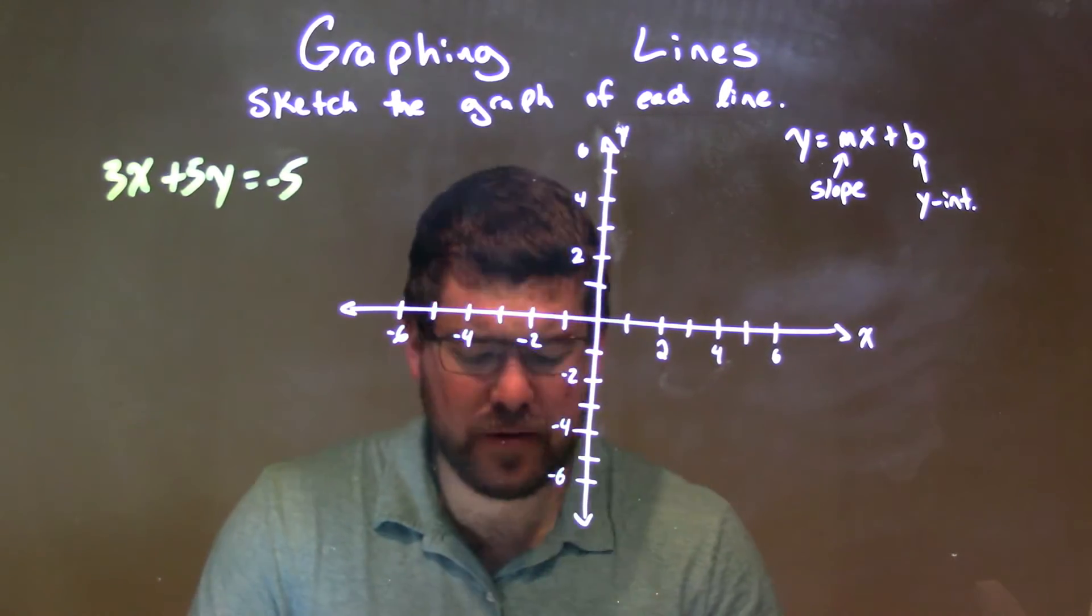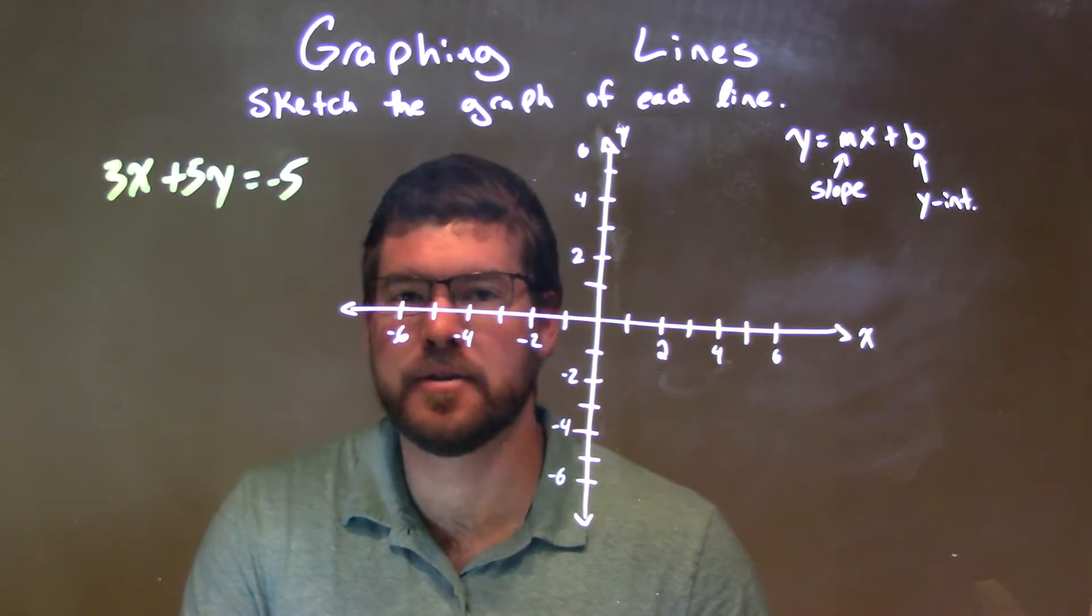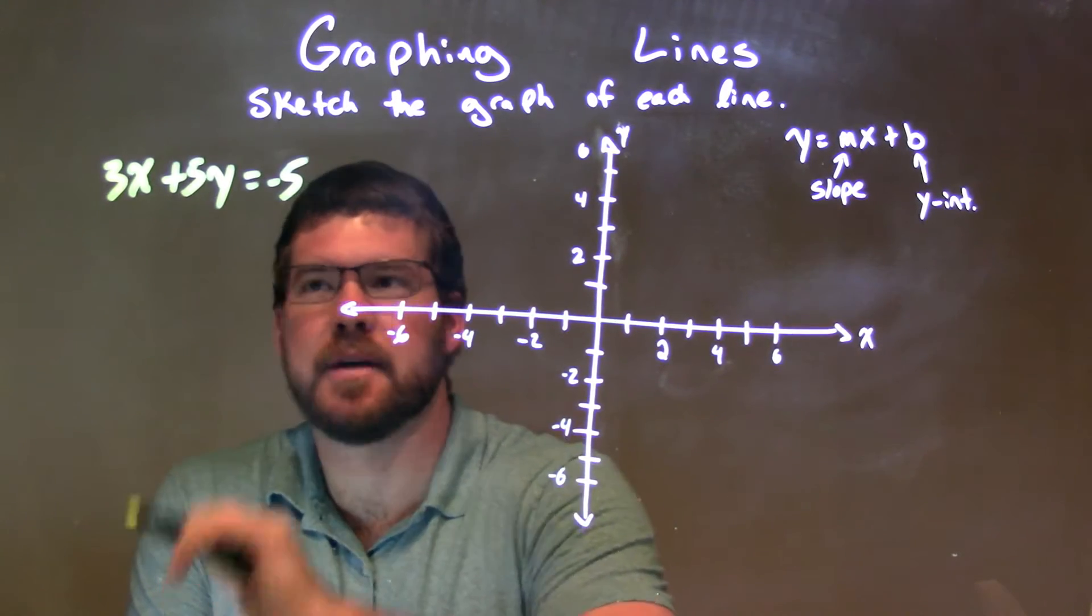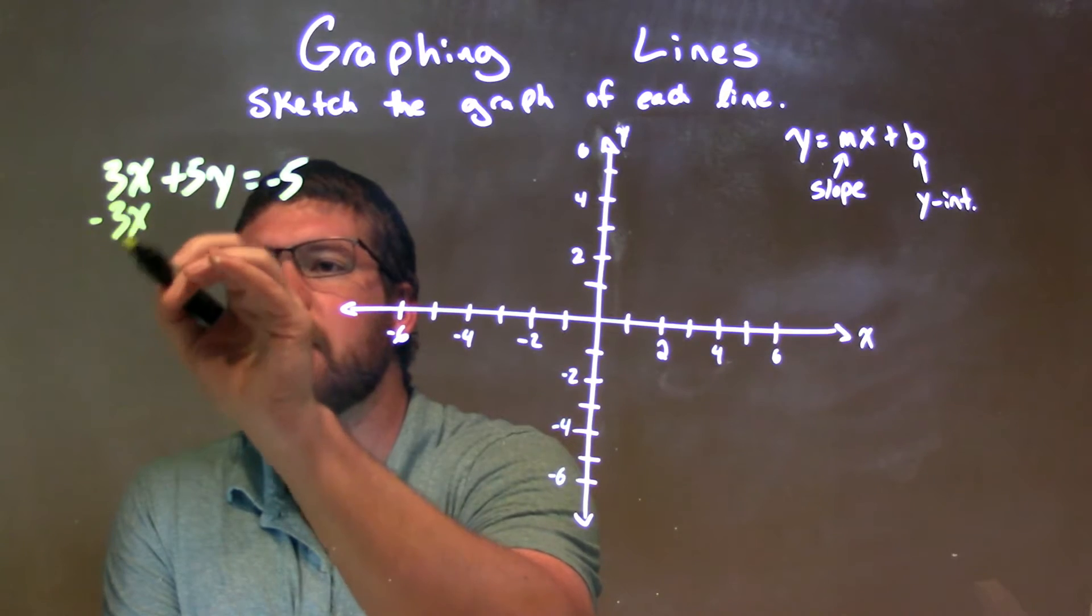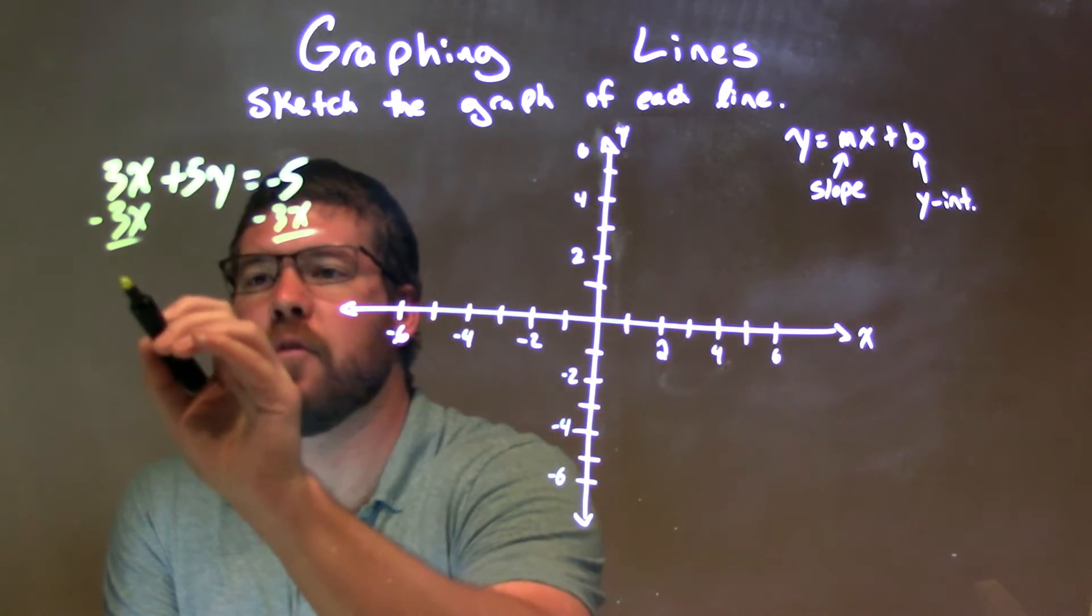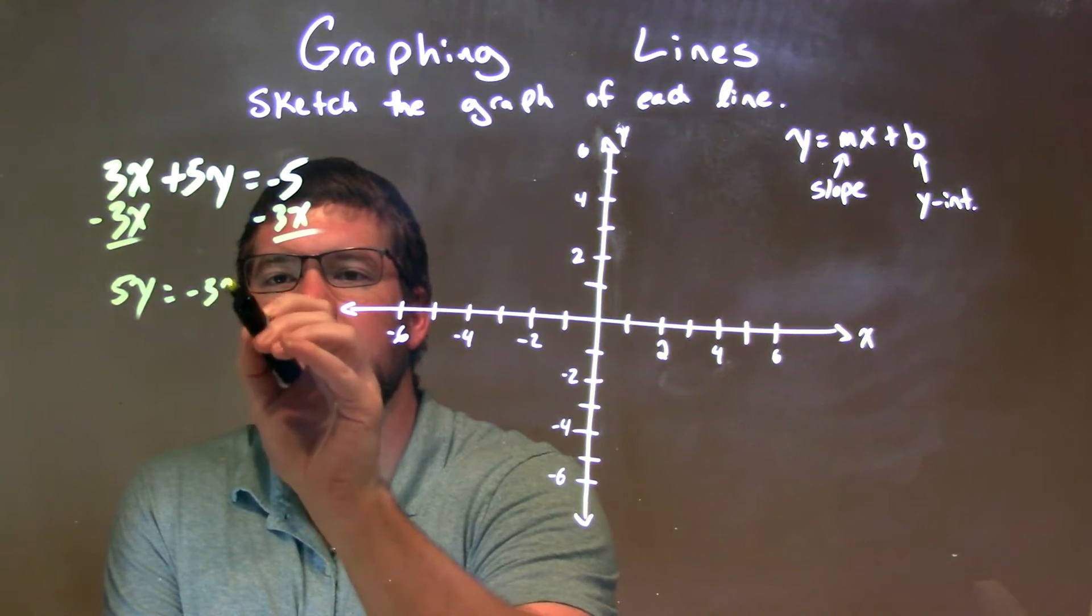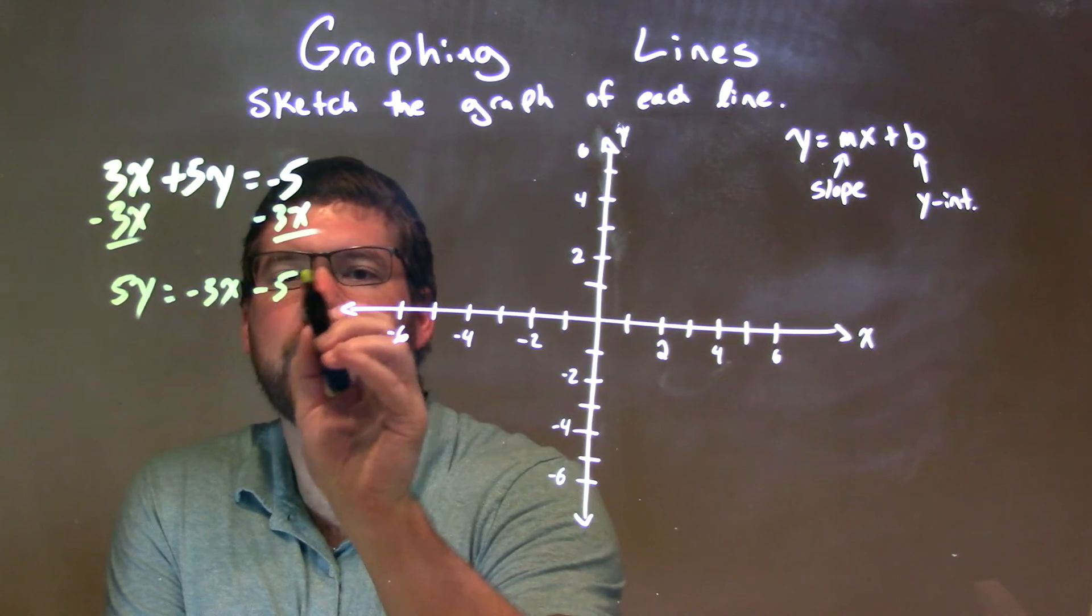Well, what I like to do is get this into my slope-intercept form from our standard form. So that means getting y by itself. So I'm going to subtract the 3x to both sides, and that leaves me with the 5y by itself on the left equals, I'm going to put negative 3x first, minus 5.